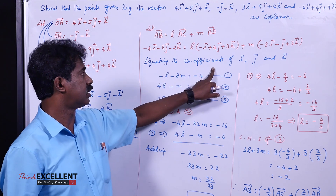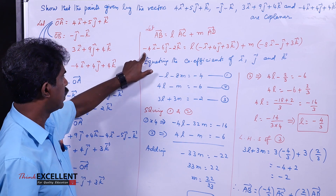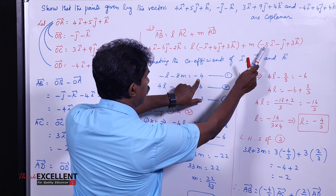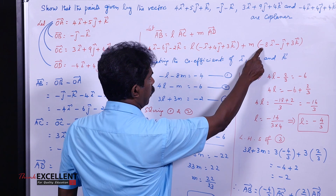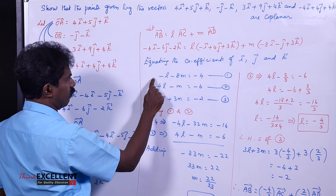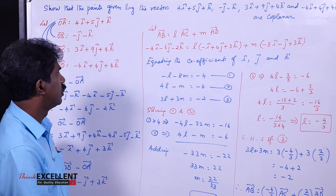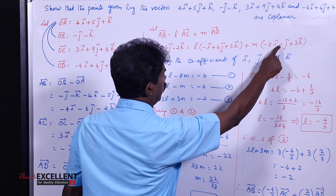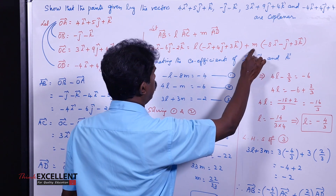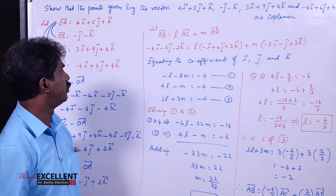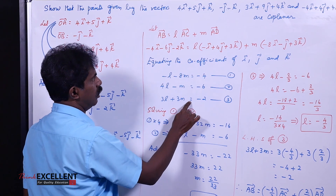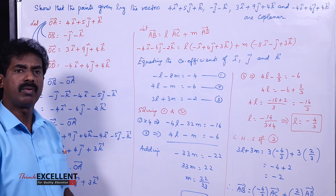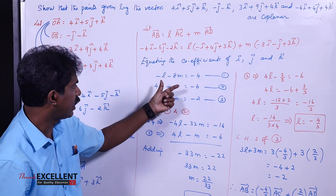Substitute all values into AB = L times AC + M times AD. Then equate the coefficients of i, j, and k to get three equations. The i-coefficient gives: minus L minus 8M equals minus 4 (equation 1). The j-coefficient gives: 4L minus M equals minus 6 (equation 2). The k-coefficient gives: 3L plus 3M equals minus 2 (equation 3). Solve any two equations to find L and M.